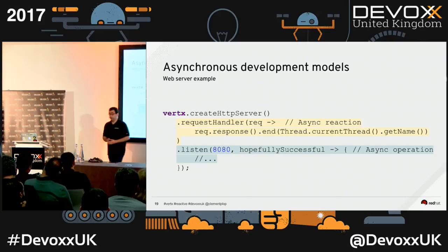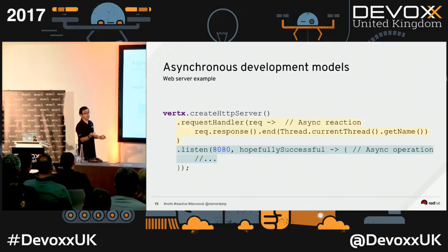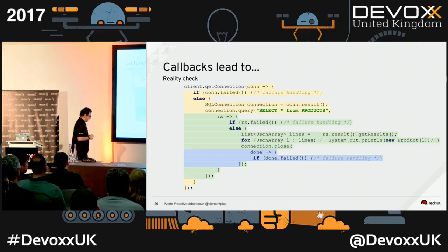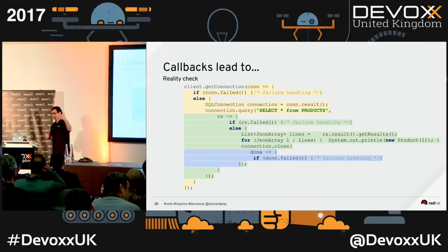The advantage of using a single thread is that you don't need to synchronize anymore, because you can't be called at the same time — there is a single thread. Callback leads to what we call callback hell.